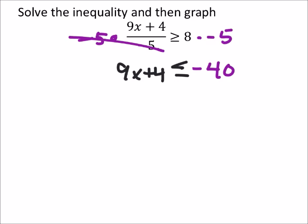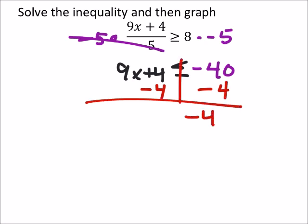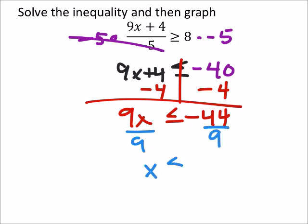Now we can continue as regular. Negative 44, and this is comparing to 9x. So dividing both sides by 9: x is less than or equal to negative 44 ninths.